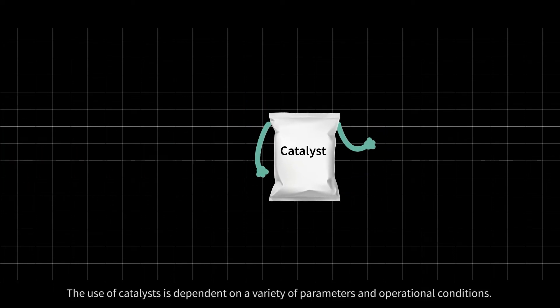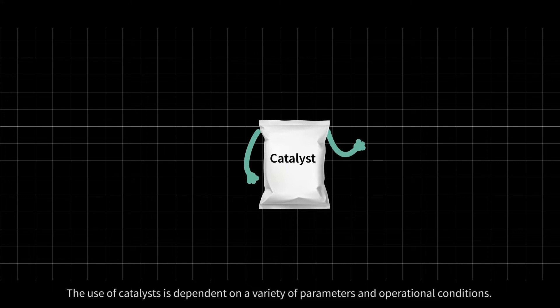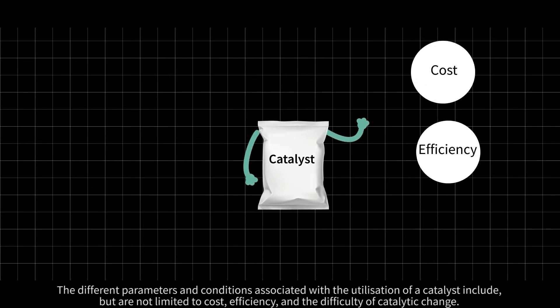The use of catalysts is dependent on a variety of parameters and operational conditions. The different parameters and conditions associated with the utilization of a catalyst include, but are not limited to, cost, efficiency, and the difficulty of catalytic change.